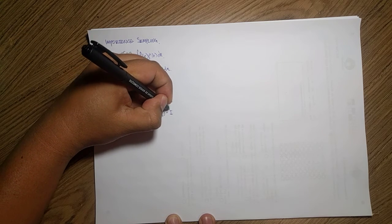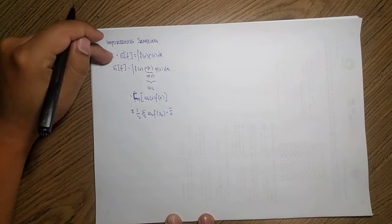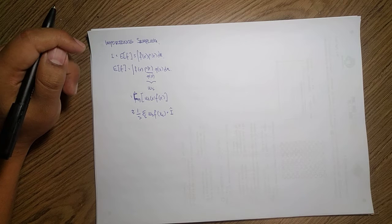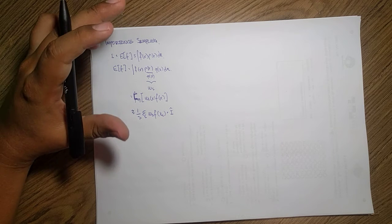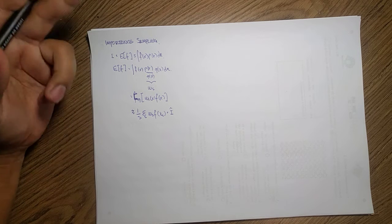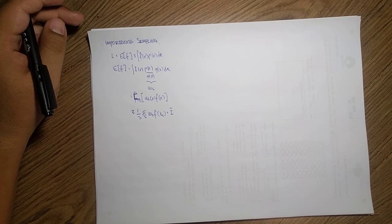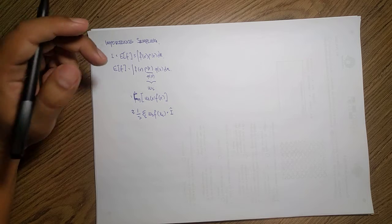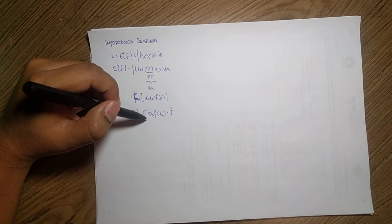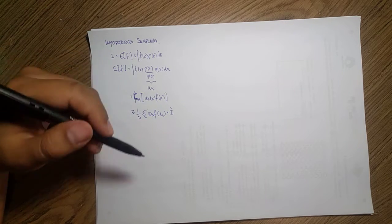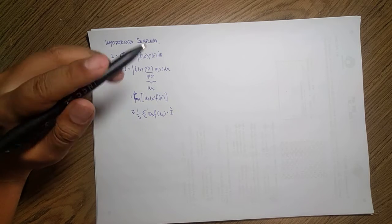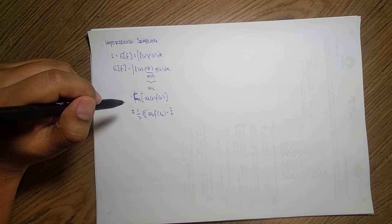This is our importance approximator. Now, unlike rejection sampling, in which we just discard some of the samples we don't like, here we use all of them because we're going to weigh them. I can just keep drawing samples, and if they are really bad, the weight is going to be really small, so it won't matter much in the end.